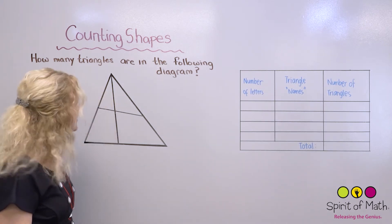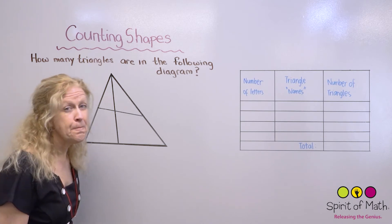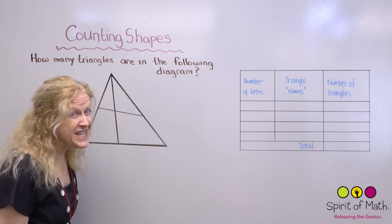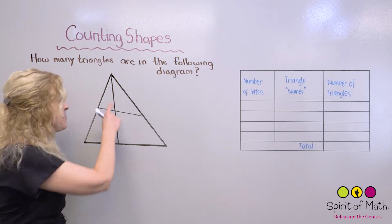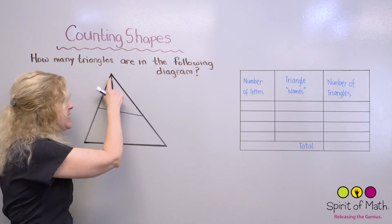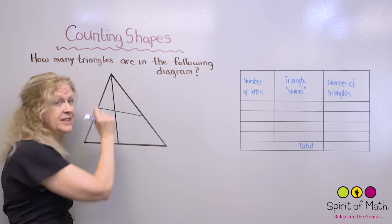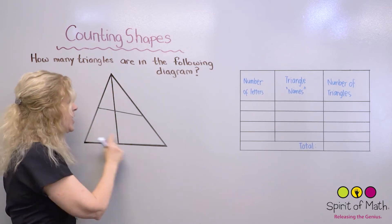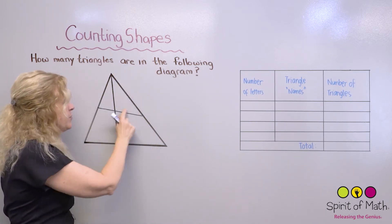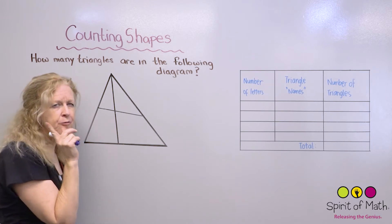So you have to count all the triangles. Now, some of you may say, well, there's one triangle. Yes, there is that one big triangle, but there's more than that. Can you see any others? Did you see at least another one or two? Let's see. I see one right here, and I see one right here. So that's one, two, three.